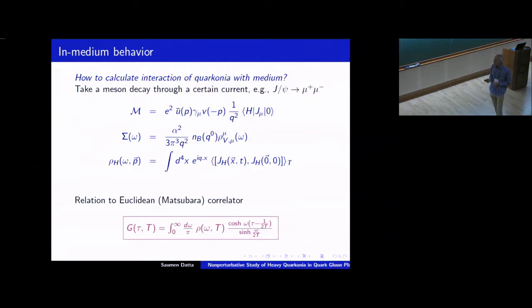So how does one calculate interaction of quarkonia with medium? This part is standard thermal field theory. You know that if you want to study the behavior of the vector current, for example, which couples to J/psi, I will look at the vector current correlation function. In particular, since much of the interesting information, much of the interesting questions that we can ask are asked in real-time, whereas on lattice we have access only to Euclidean time.